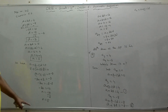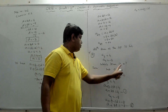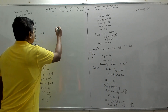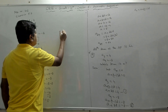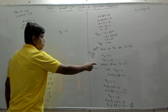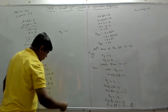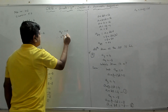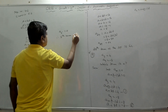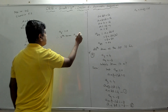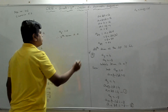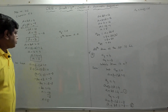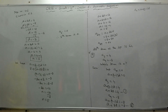So a5 = 0, which means the fifth term is 0. The answer to 'which term is 0?' is the fifth term. The fifth term of the AP is 0. All of you can pause the video and take notes.